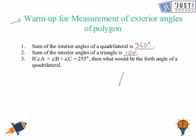In the next question, it is given that there is a quadrilateral. The sum of the three angles of a quadrilateral, say angle A plus angle B plus angle C is 255 degrees. So we need to find out the fourth angle.